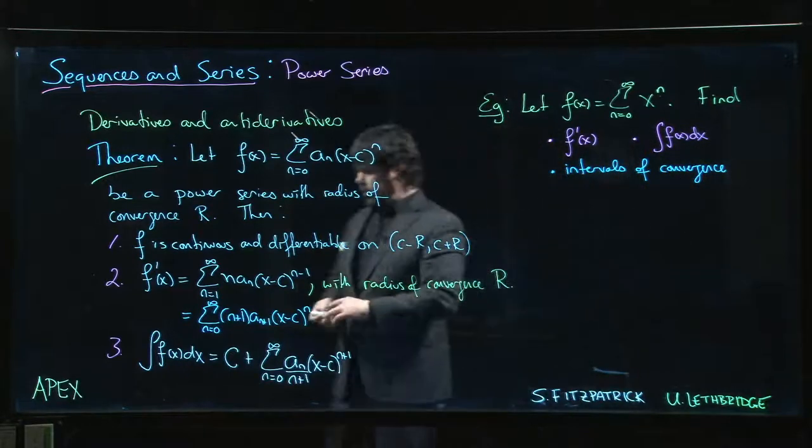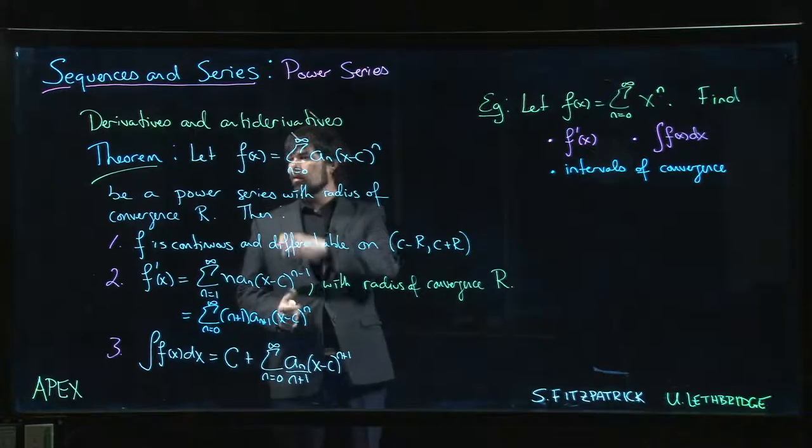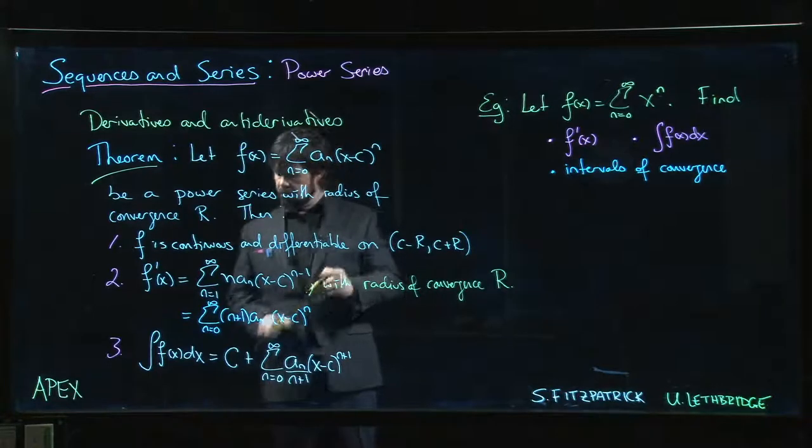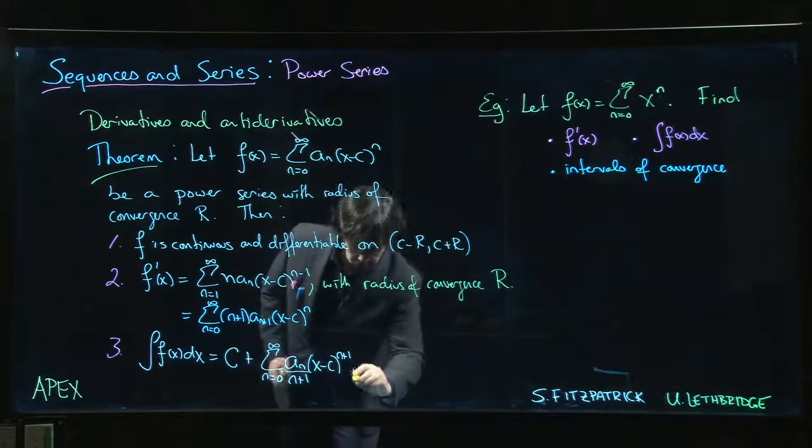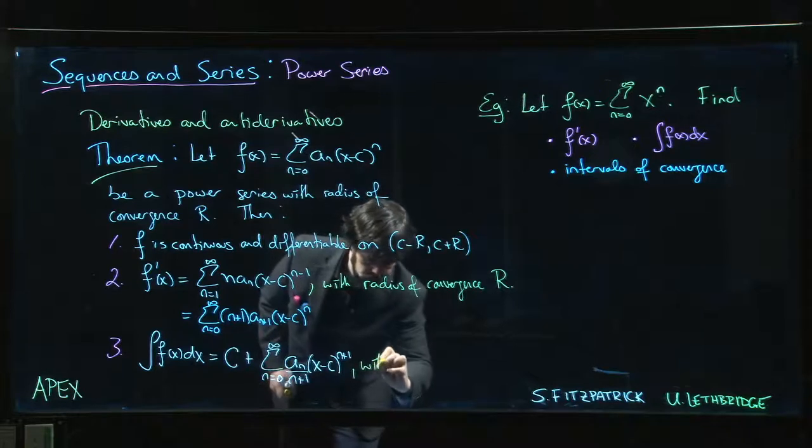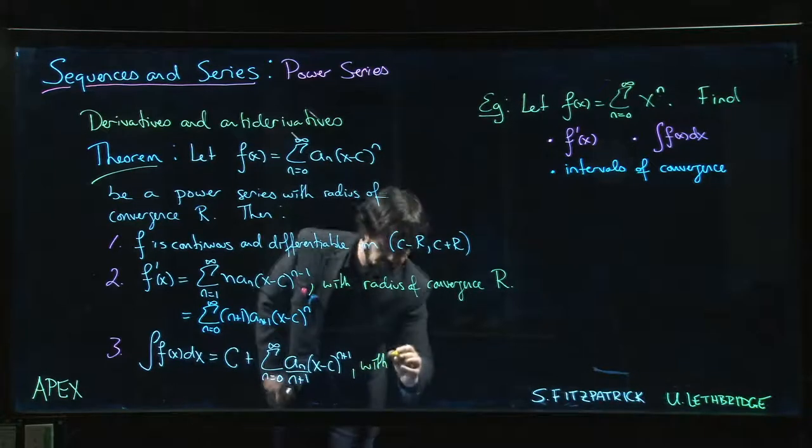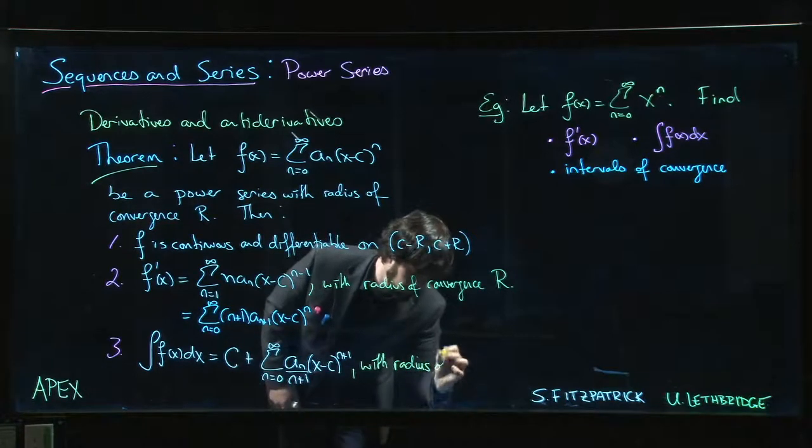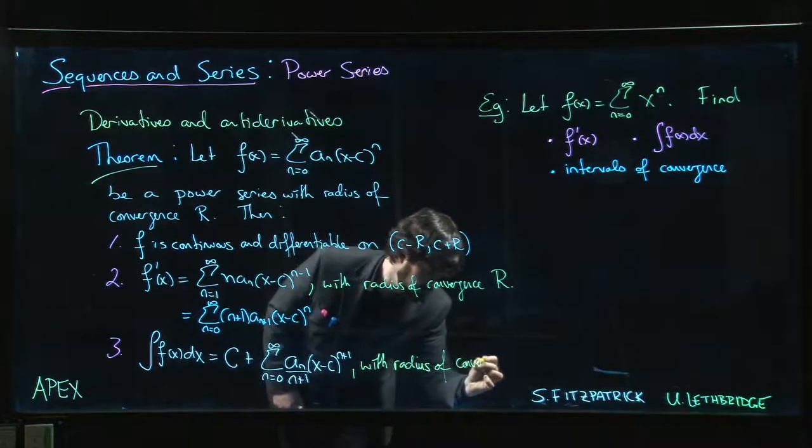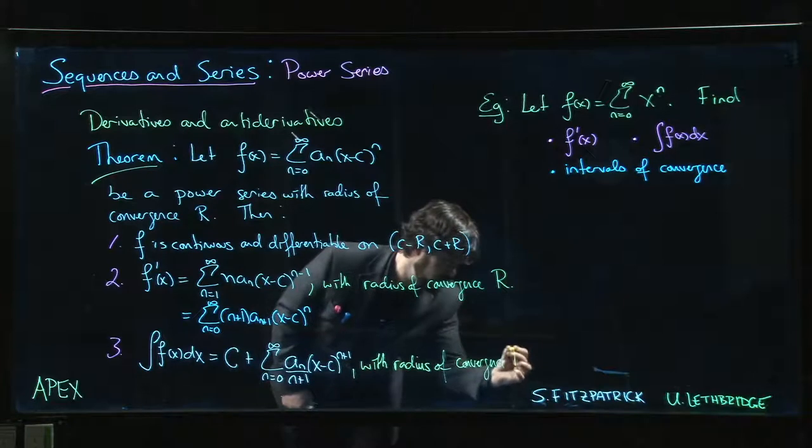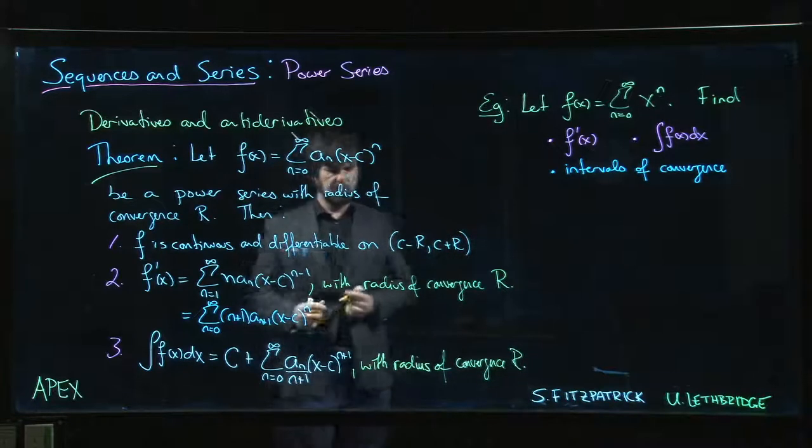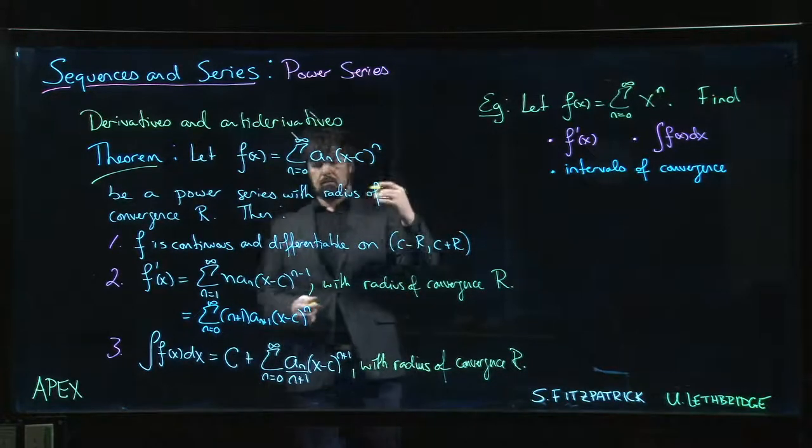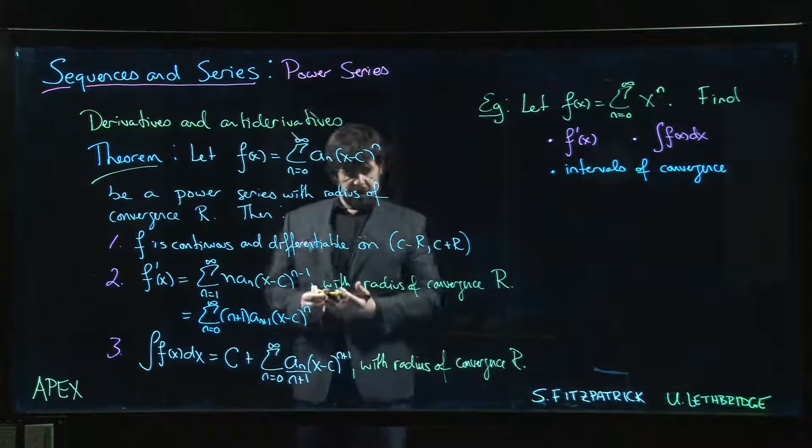Alright, let's look at an example. One thing we forgot to note in the last video for this theorem: this also has the same radius of convergence as the original power series. So both derivative and antiderivative preserve the radius of convergence but not necessarily the interval of convergence.